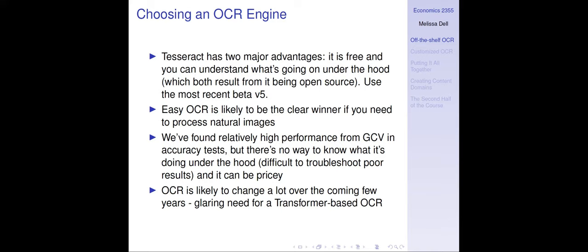If you want to work with OCR on natural images, EasyOCR is likely to be the clear winner and will perform much better than Tesseract. On the other hand, for documents, Tesseract is going to be much faster and more accurate than EasyOCR. We found relatively high performance from Google Cloud Vision in accuracy tests, particularly for less supported languages, but the problem is there's no way to know what it's doing, making troubleshooting difficult.